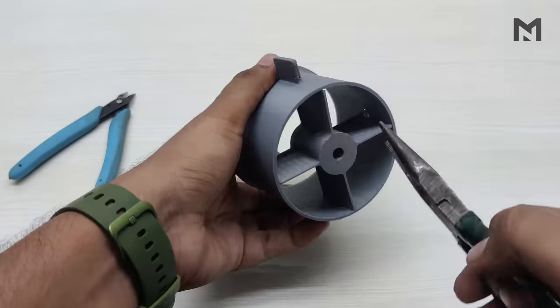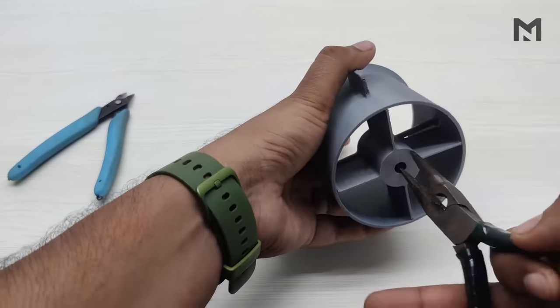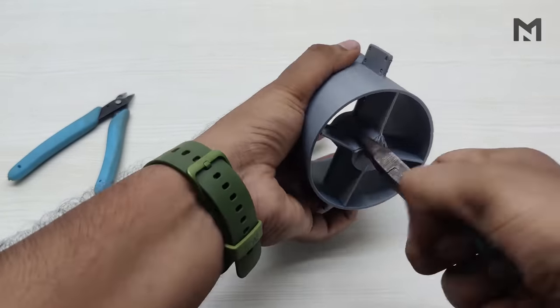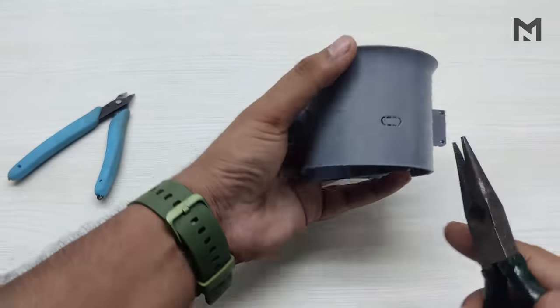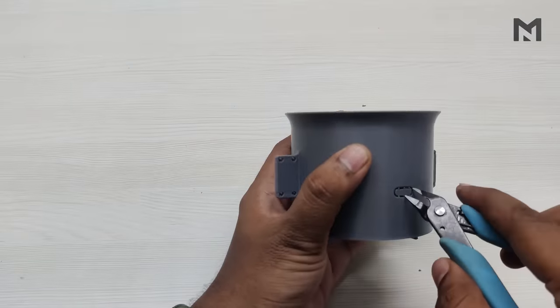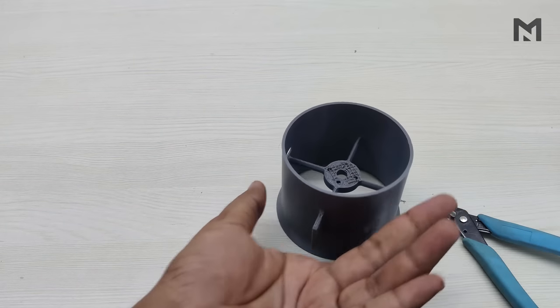Grab the support with a nose plier and twist it from all sides. Don't try to pull it or it may damage the part. Keep twisting it from all sides until it becomes loose and it will easily come out.